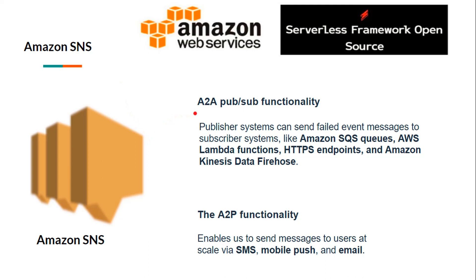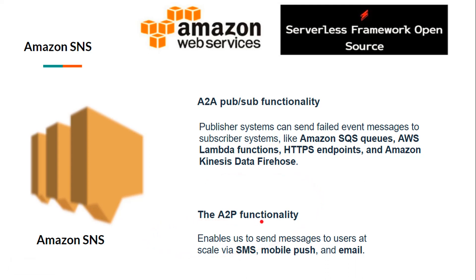To achieve that we are going to use Amazon SNS, which is Simple Notification Service. Amazon SNS provides two types of functionalities: A2A PubSub and A2P. With PubSub we can publish error messages from one system and subscribe those messages to other systems like Amazon SQS, Amazon Lambda functions, and HTTPS endpoints. With A2P we can send SMS, mobile push notifications, and email notifications.